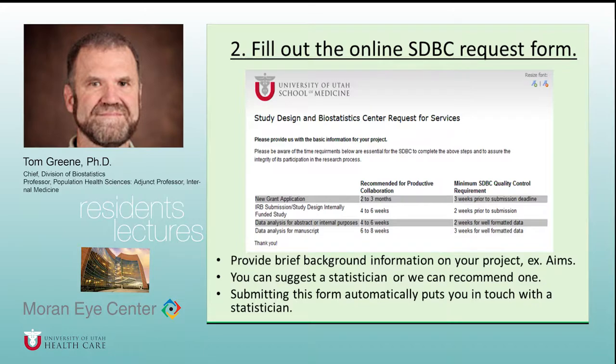The collaboration request form is available on our website — it's a short form where you provide background on your project and basic objectives. You can suggest a specific statistician if you have one in mind. Filling out the form gets you into our tracking system so projects don't get lost. The absolute worst way to contact our center is to email me directly — I get so much contact that things can fall through. Timelines are critically important: initiate the collaboration process early.